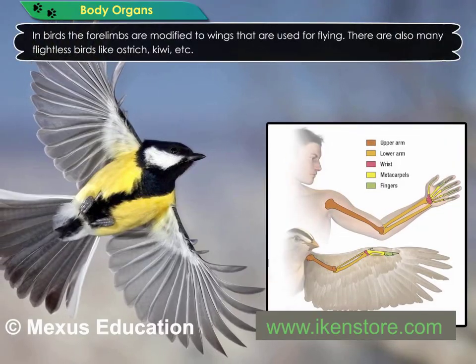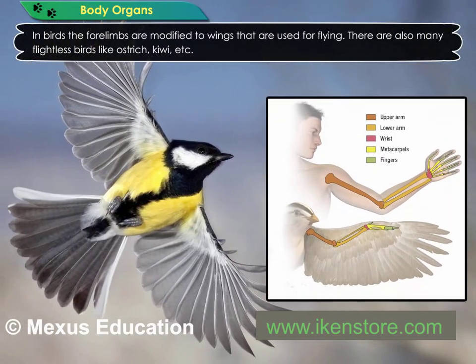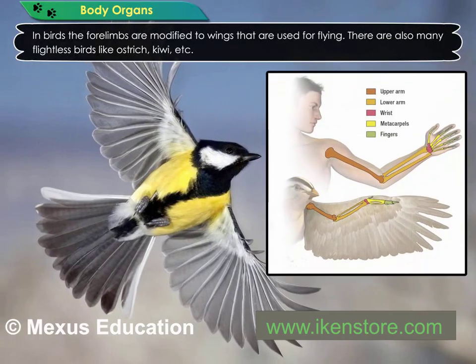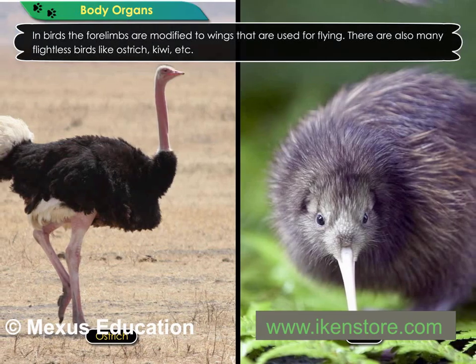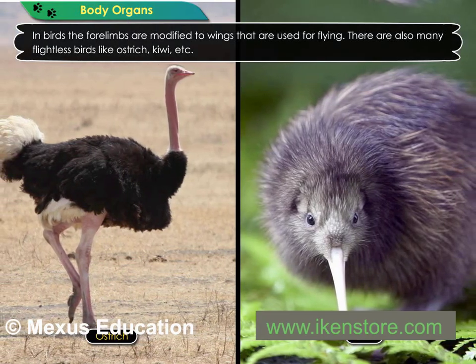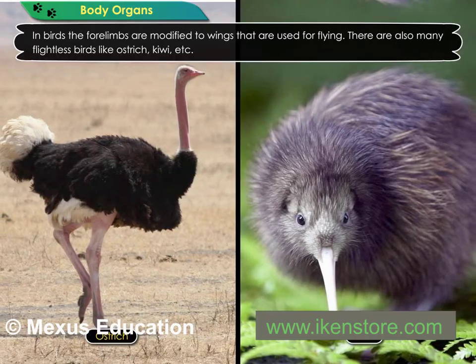In birds, the forelimbs are modified to wings that are used for flying. There are also many flightless birds like ostrich, kiwi, etc.